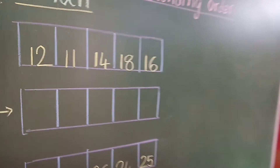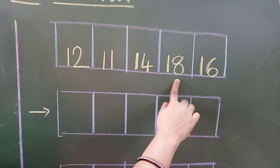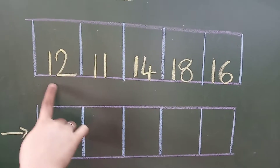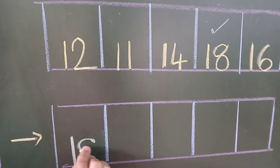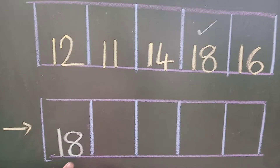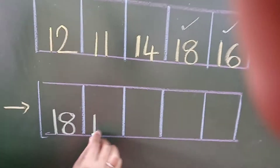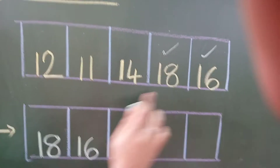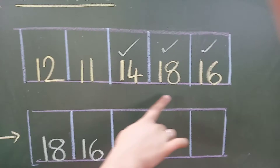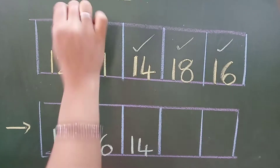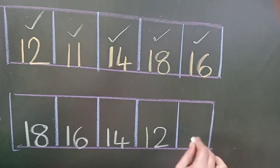Now let us jump to here. Let us read the numbers: number 12, number 11, number 14, number 18 and number 16. So first we have to find the biggest number. Which is the biggest number? 18. So write down here number 18. Before 18, 17 is there? Not there. Then 16 — so put a small tick on that and write down here number 16. Then which number will come? 14. 14 before — 13 is there? Not there. 13 before 12 — 12 is there. So put a small tick on that and write down here number 12. Then which number will come? Number 11.